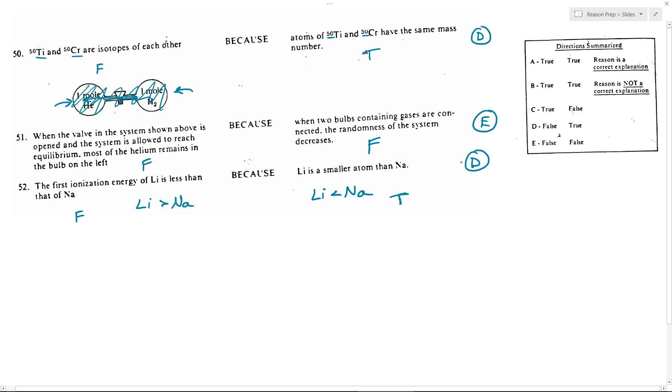So definitely want to know your trends in terms of how do elements change across a period and down a group in terms of their ionization energy, in terms of their radius, and their electronegativity.